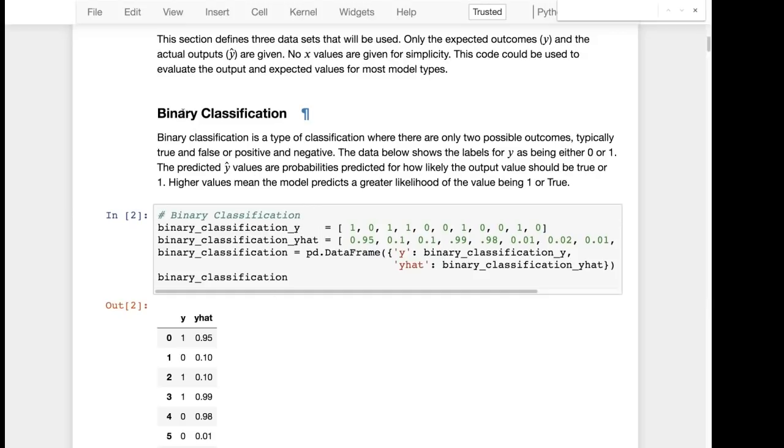So binary classification, those tend to have their own metrics. That is where you're classifying into only two values. It's going to be either one or zero.